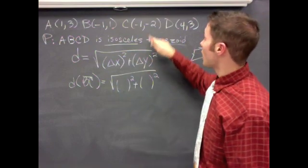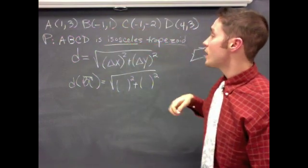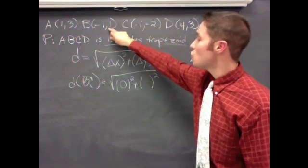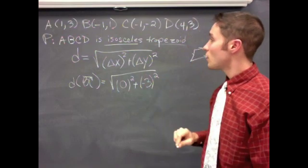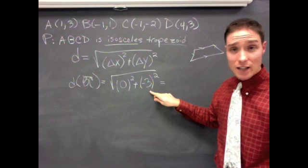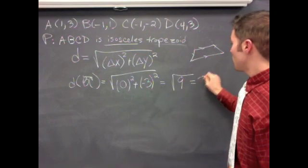We did that before. Delta Y is negative two minus one, that's negative three. All right. So remember when you square a negative, it comes out positive. So this comes out to radical nine, which is three.